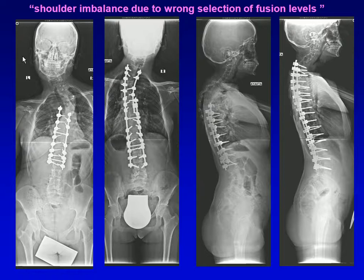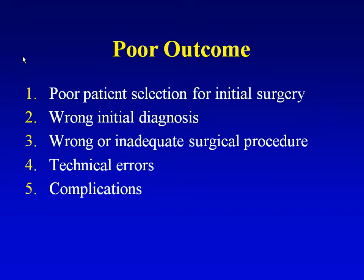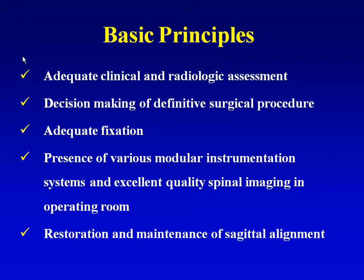You can see the revision with restoration of coronal and sagittal balance. Poor outcomes can be seen in poor patient selection for initial surgery, wrong initial diagnosis, wrong or inadequate surgical procedure, and technical errors and complications. Adequate clinical and radiological assessment, decision making for the definitive surgical procedure, adequate fixation, availability of various modular instrumentation systems, excellent quality spinal imaging in the operating room, and restoration and maintenance of sagittal alignment are all important in revision surgery.